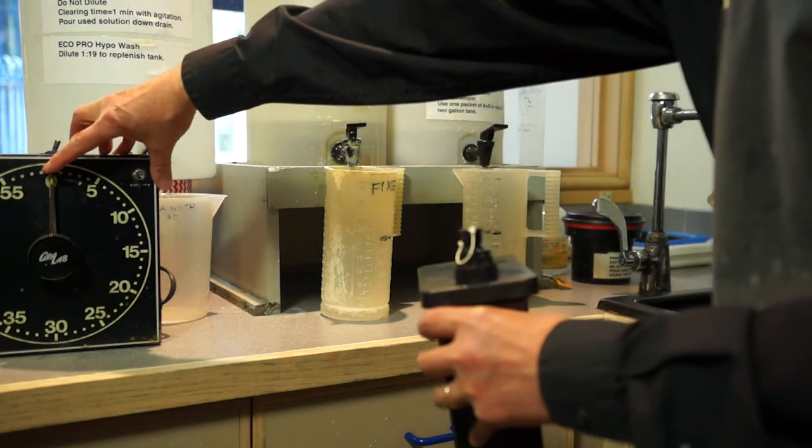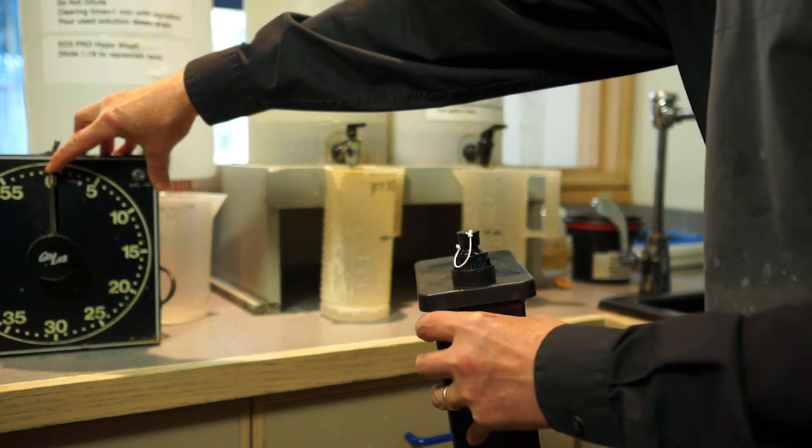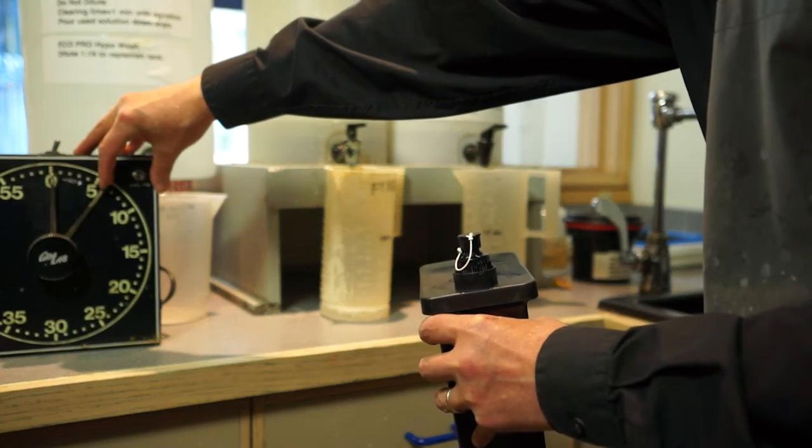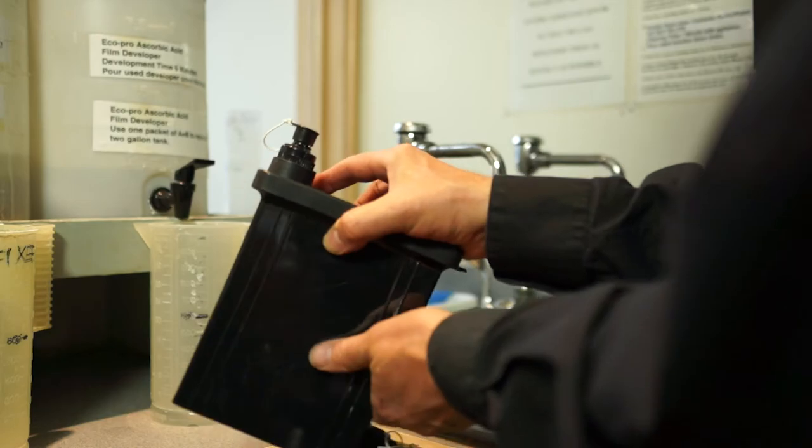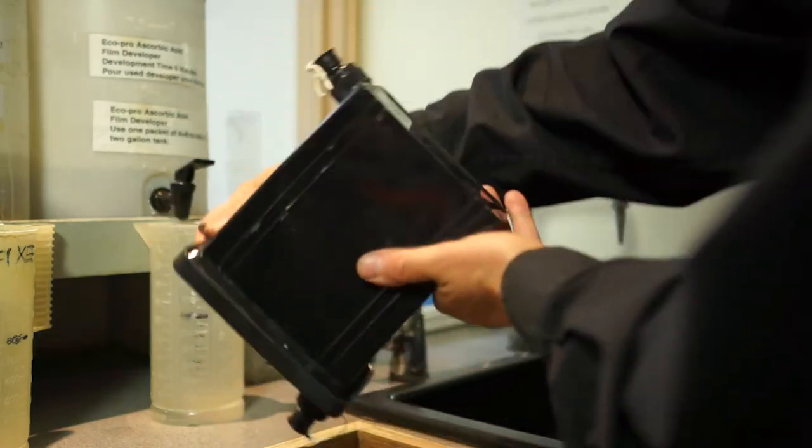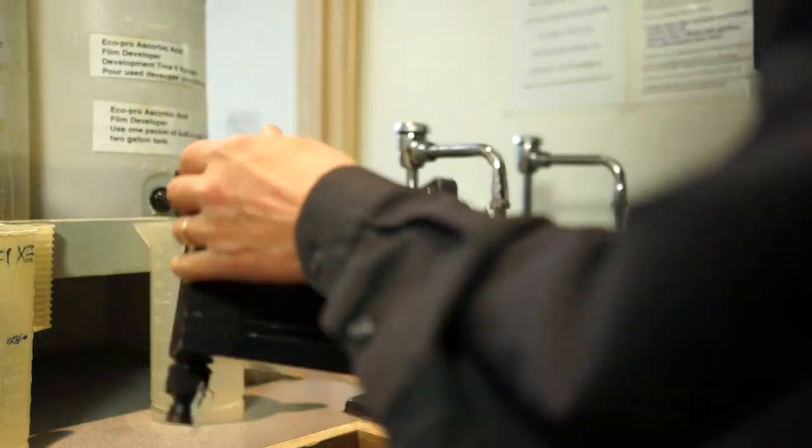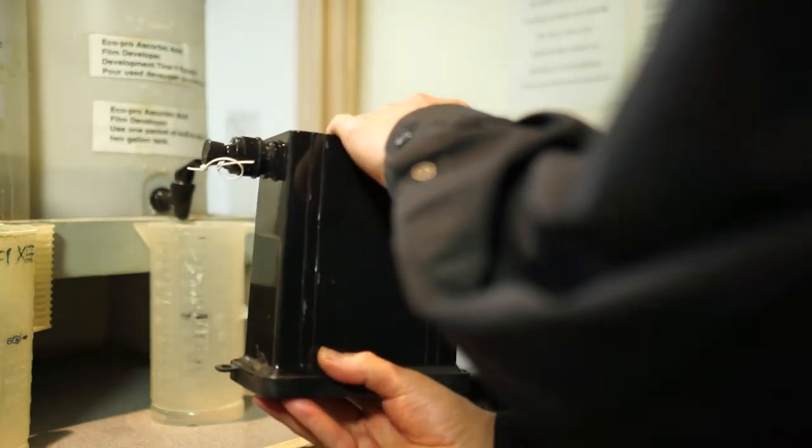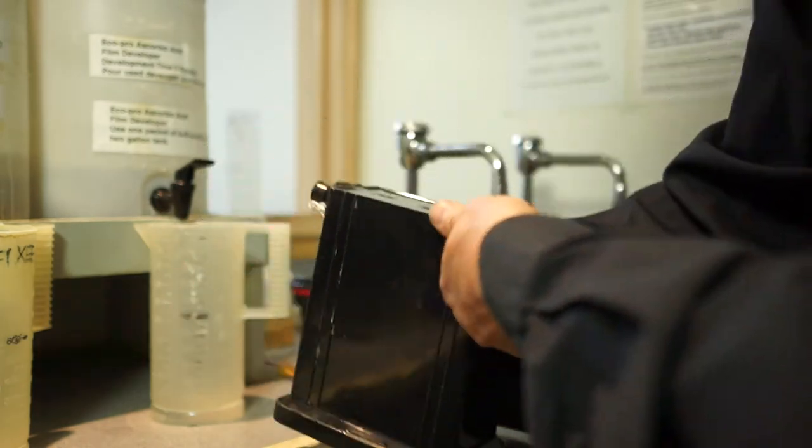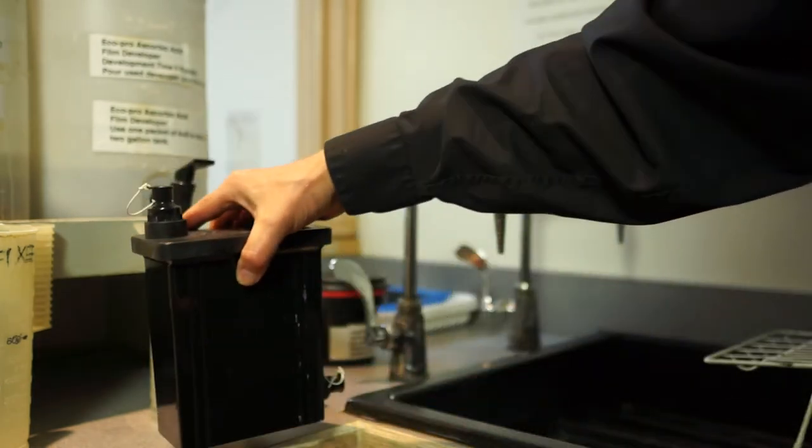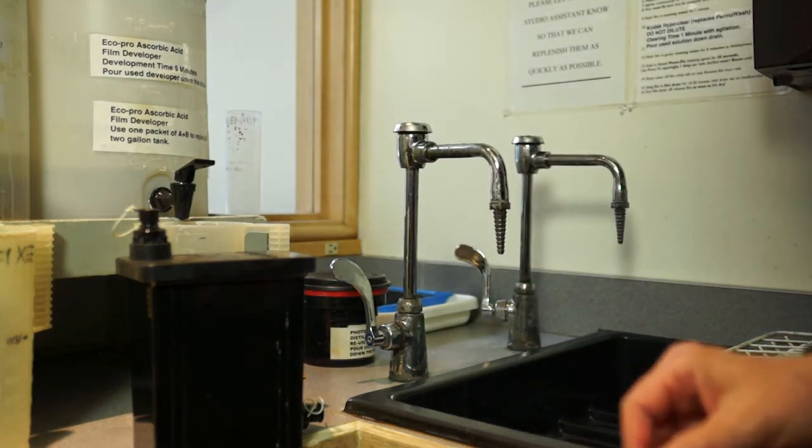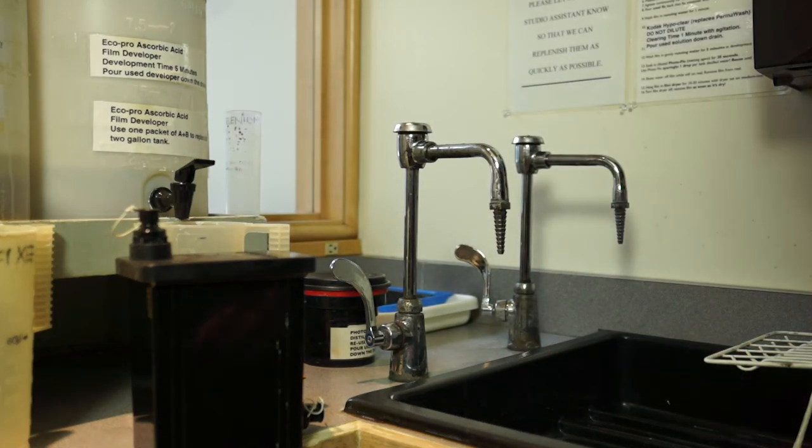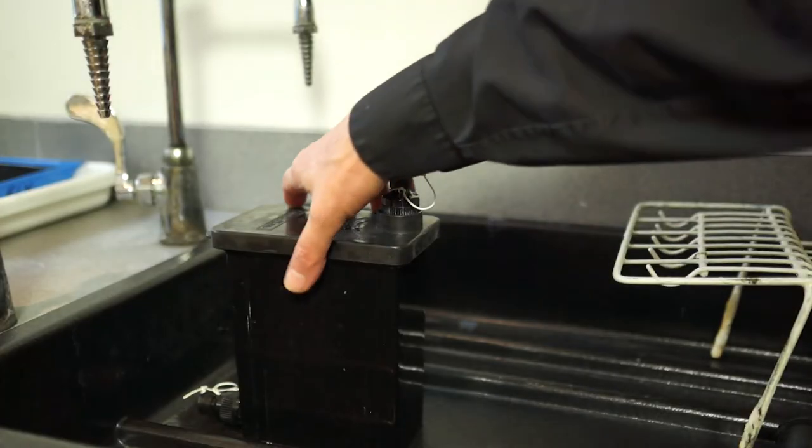These are pinhole negatives so I'm going to give them a little extra time. Five minutes would be standard - I'm going to give this seven. Agitate the tank by tipping it the long way and inverting it. You want to do that for the first 15 seconds. After the 15 seconds are up, you want to give a little tap on the table to remove any air bubbles and then just let it sit for the next 25 seconds, just like you would for the roll film tank. These tanks can leak, so it's a good idea to do this over the sink.